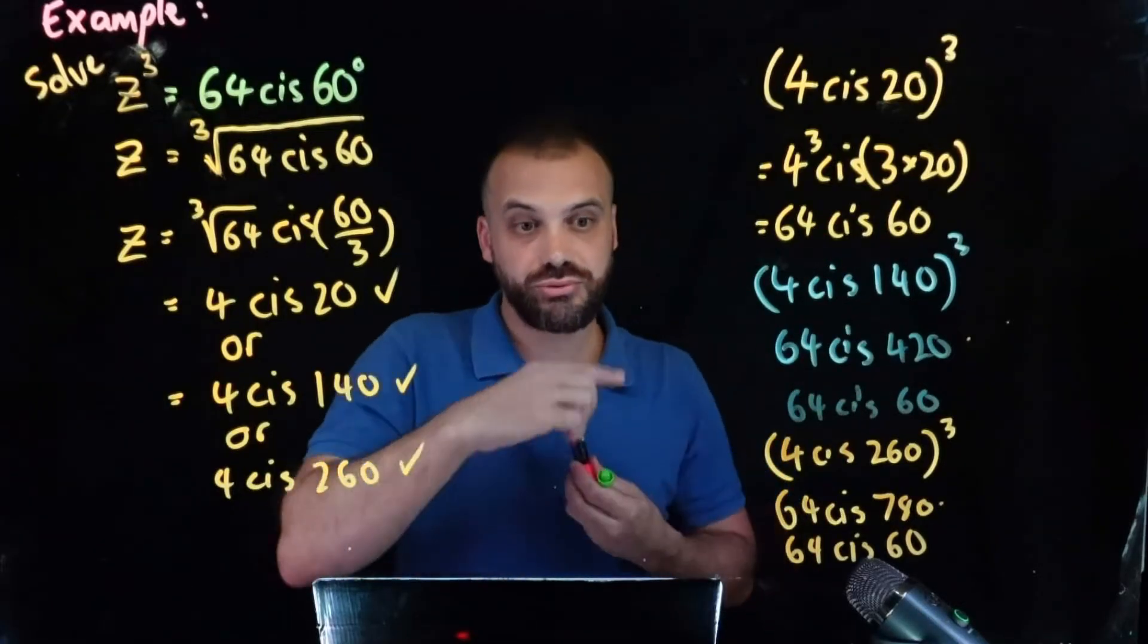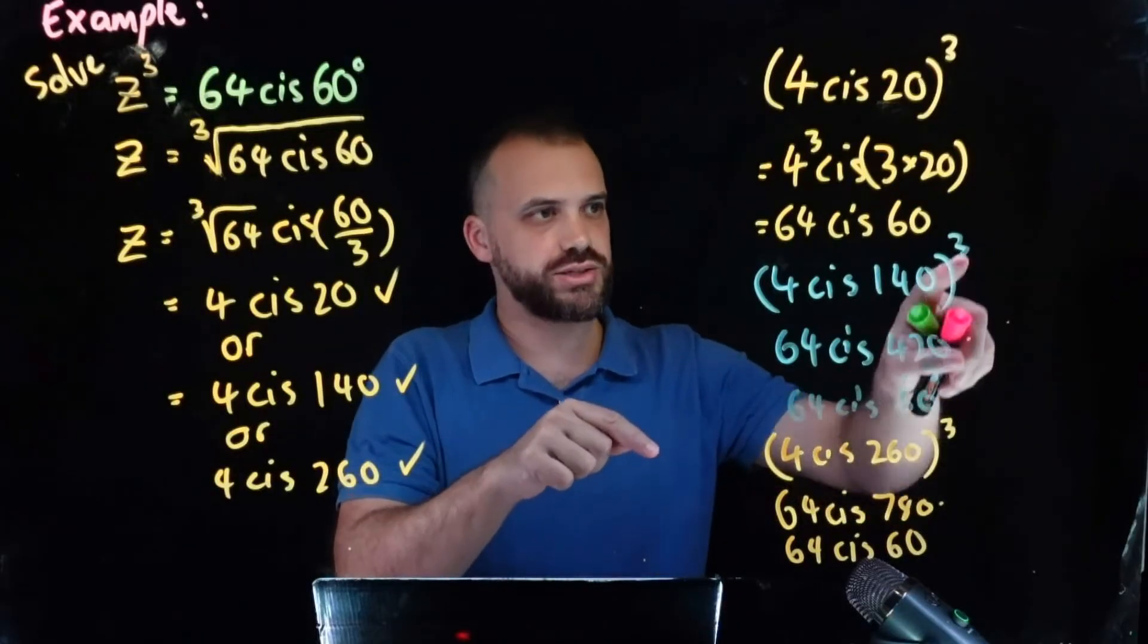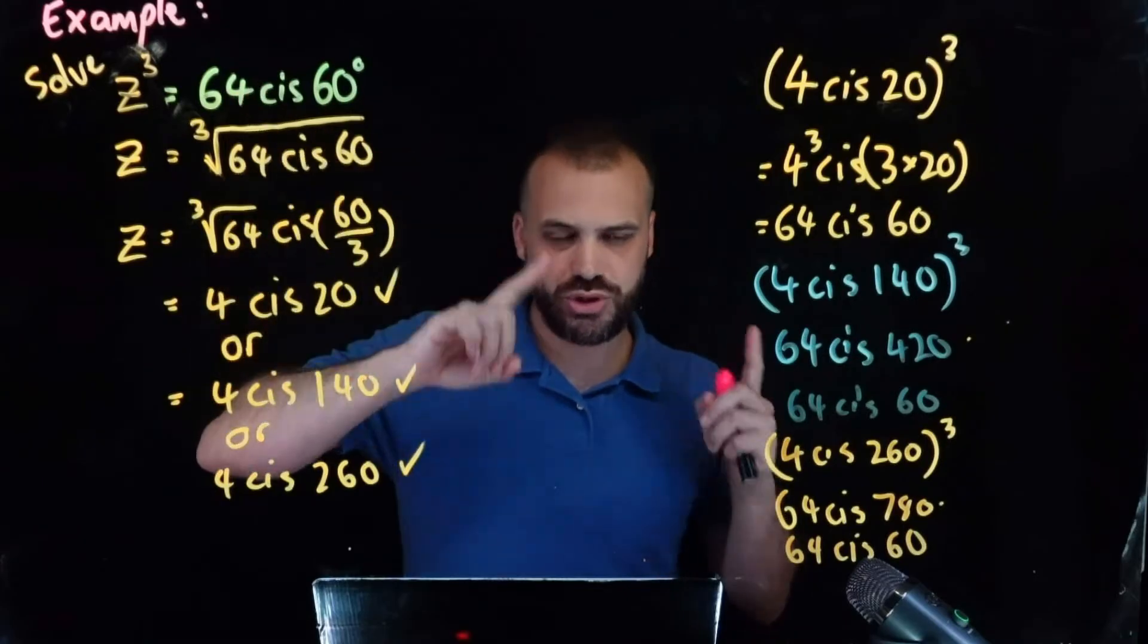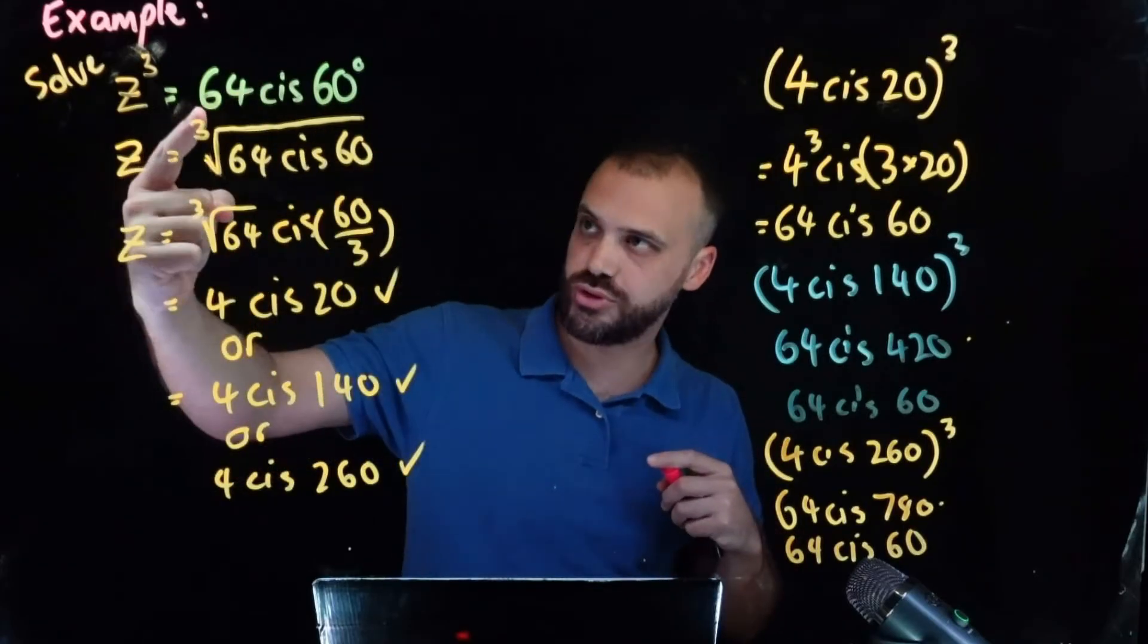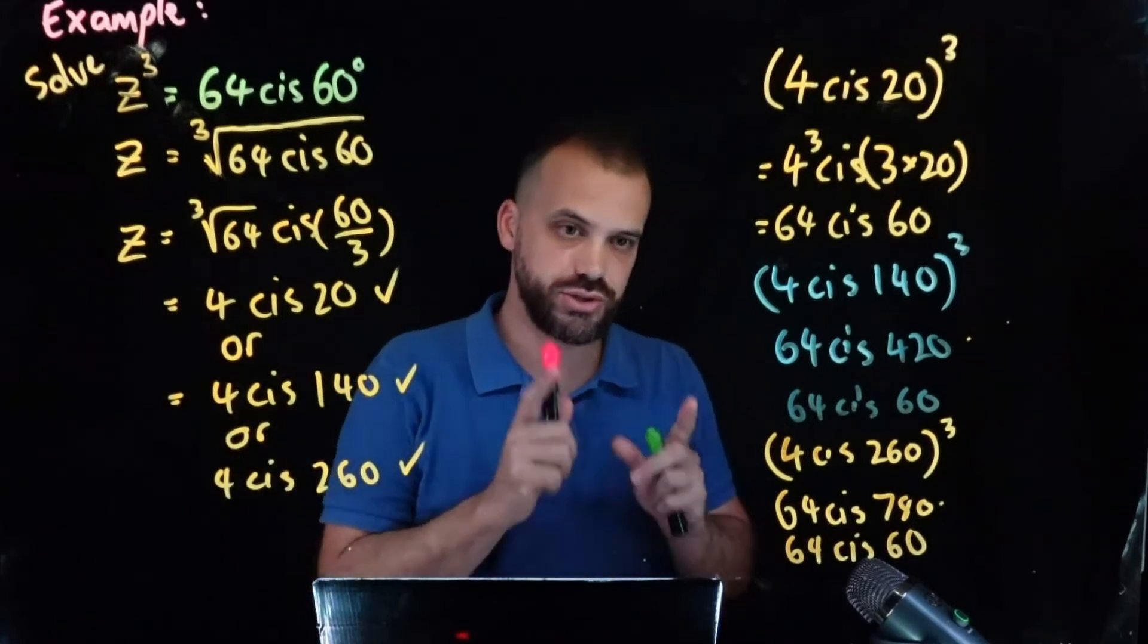So this is identical to this is identical to this. You can see that there are three different complex numbers that we can raise to the power of 3 and get our original answer here, which is why when we cube root a complex number we're going to get three solutions.